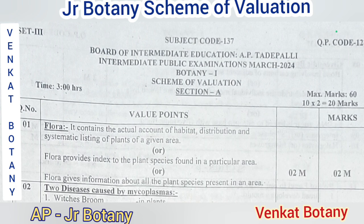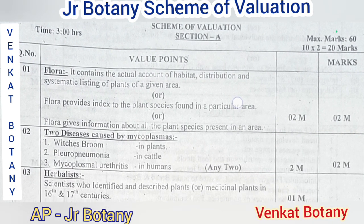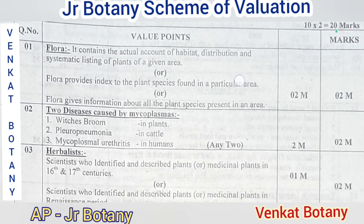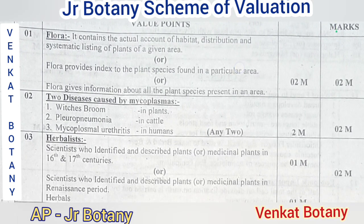The next question is: name two diseases caused by mycoplasmas. Mycoplasmas cause three diseases: Brumina plants, plural pneumonia in cattle, and mycoplasma erythritis in human beings.